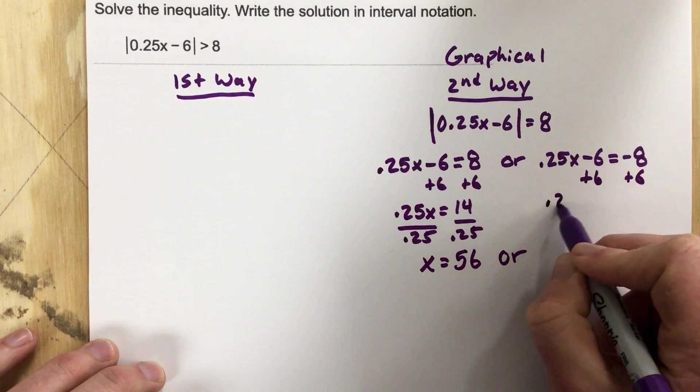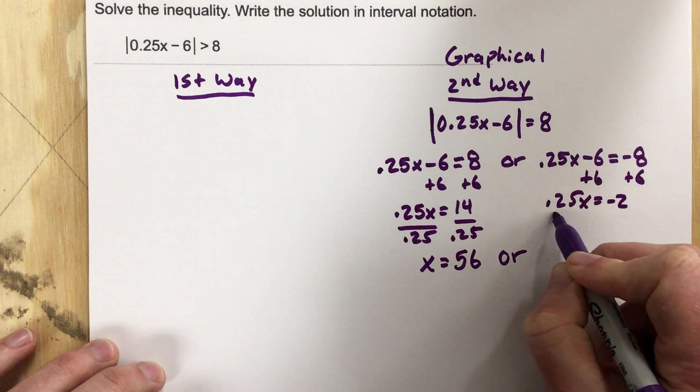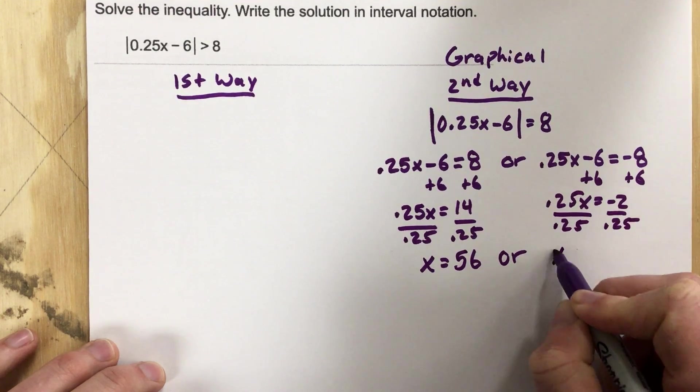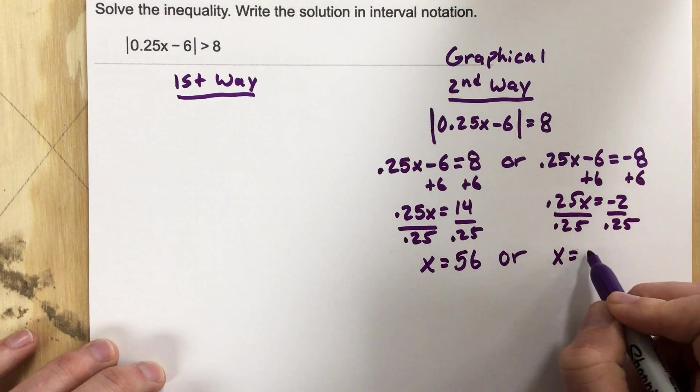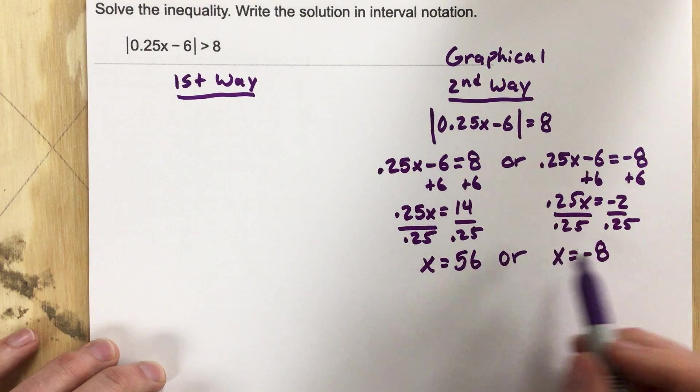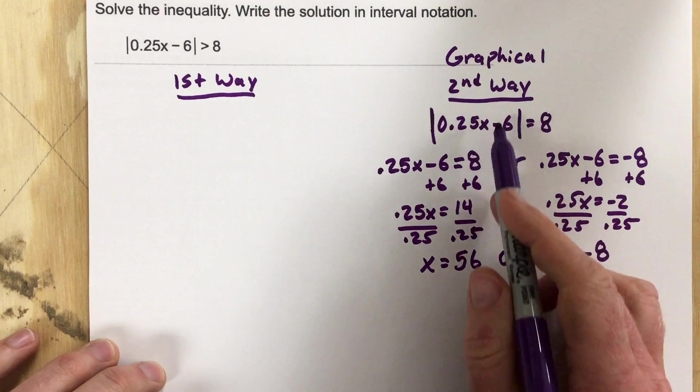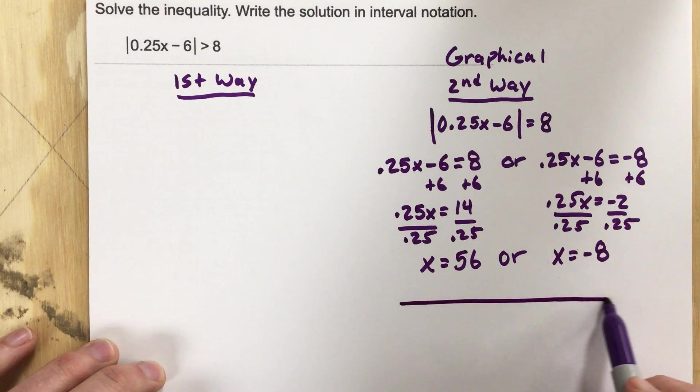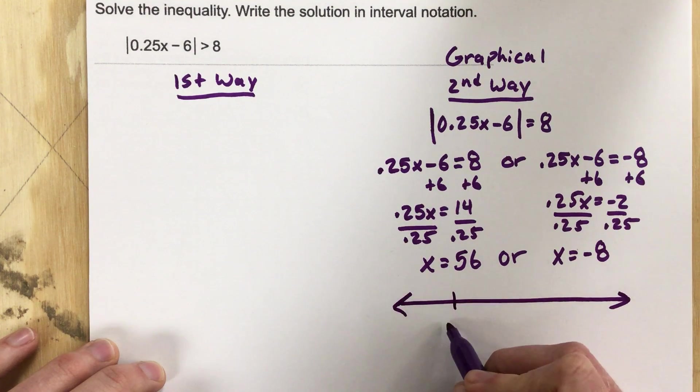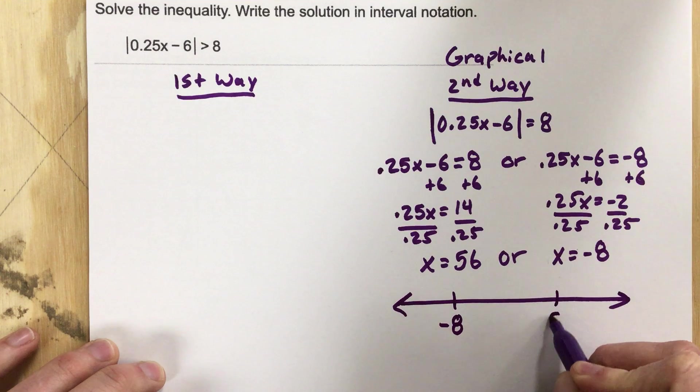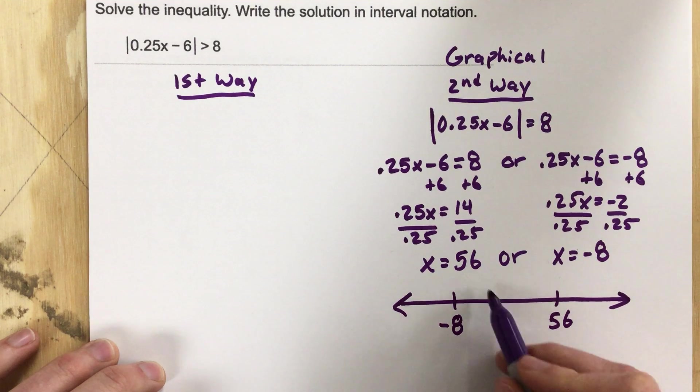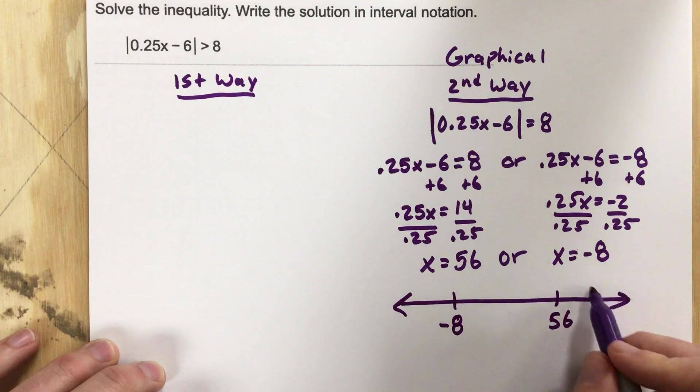So I have my, essentially you could call them roots for this absolute value function. What I'm going to do is now test from negative 8, 56. I marked them on the number line, and I'm going to test values to the left of negative 8, the middle of negative 8 and 56, and to the right of 56.